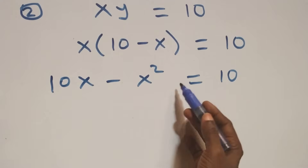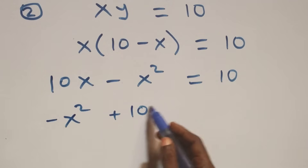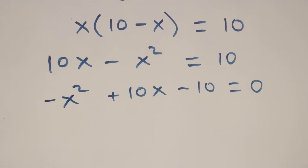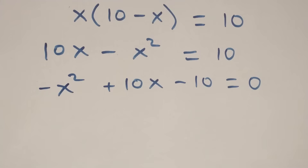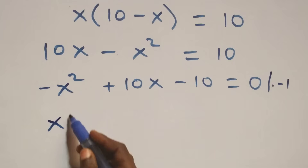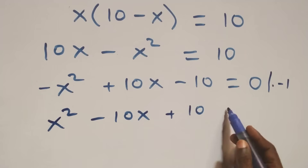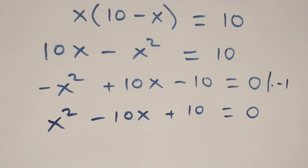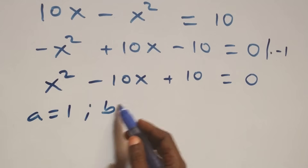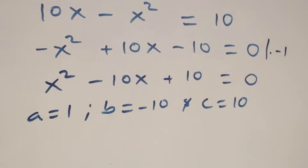We expand the bracket: this becomes 10x minus x² equals 10. Taking 10 to the left-hand side and rearranging gives minus x² plus 10x minus 10 equals zero. Multiplying through by minus one gives x² minus 10x plus 10 equals zero. This is a quadratic equation with a equals 1, b equals minus 10, and c equals 10.